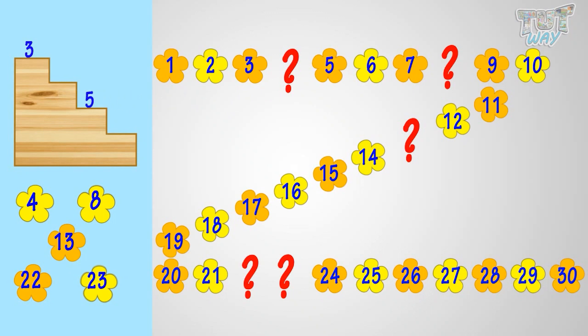For a number that comes after three, count forward. Three, four, five, six. Yeah! Four comes after three.